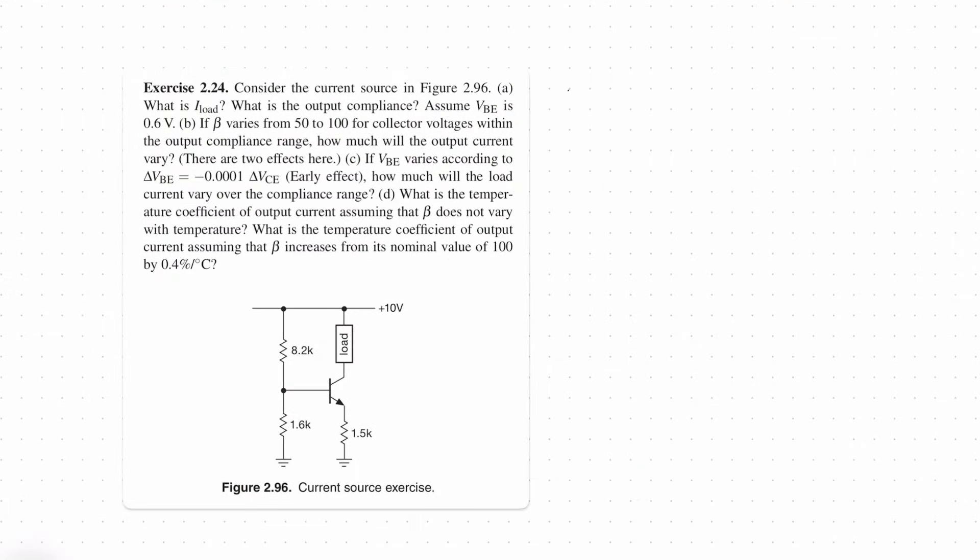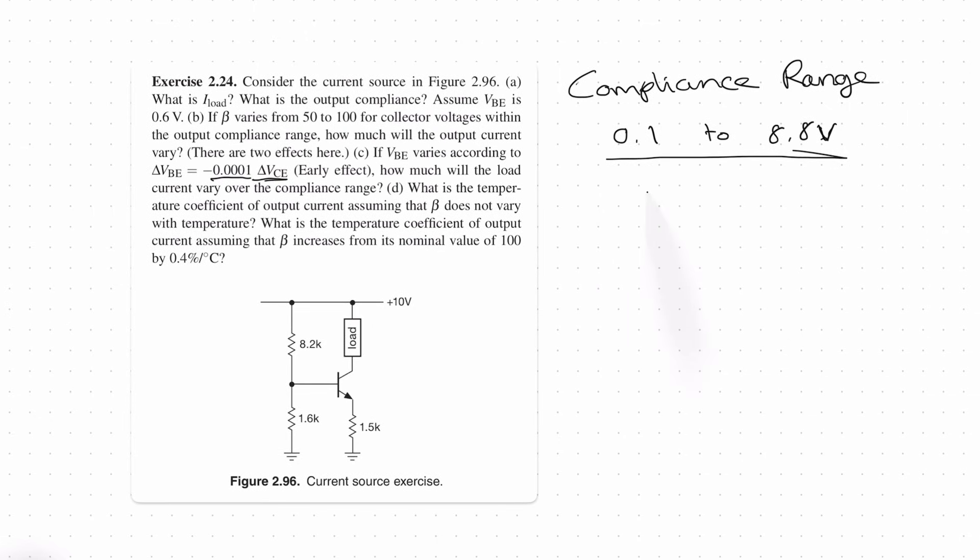Now let's continue the question and we're starting with part C. So part C says if VBE varies according to ΔVBE = -0.0001ΔVCE, how much will the load current vary over the compliance range? So previously we calculated the compliance range as 0.1 volt to I think it was 8.8 volts if I remember correctly. So we know that the VCE change is going to be this much. So if the VCE change is going to be 8.7 volts, from there we can calculate how much the VBE change is going to be using the equation that the question has given us.